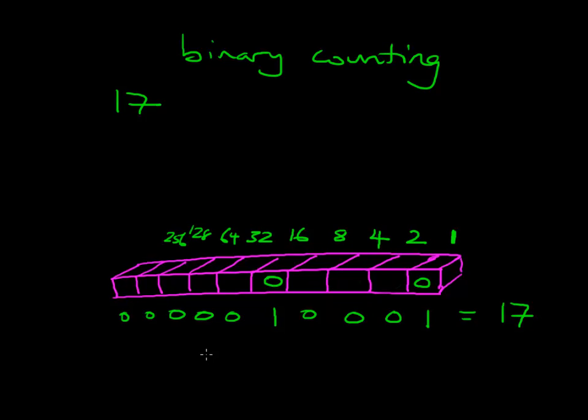And if we look at this, it's essentially saying 1 times 16 plus 1 times 1. So that's the 1s column, and the 16s column is 17. And because it's binary, we don't need to think we only ever can have 1 in there. So it's really just saying 16 plus 1 is 17.